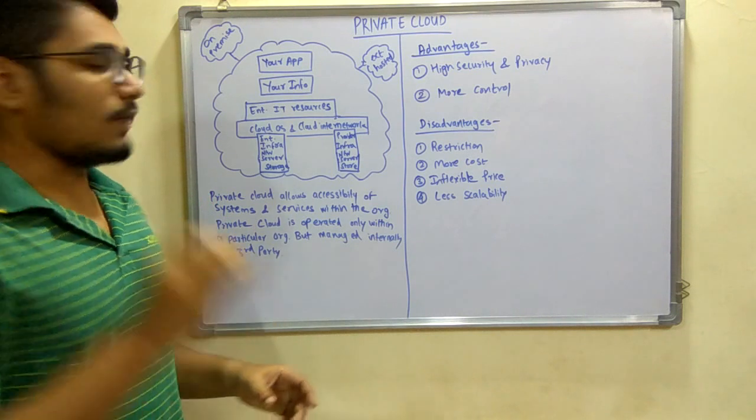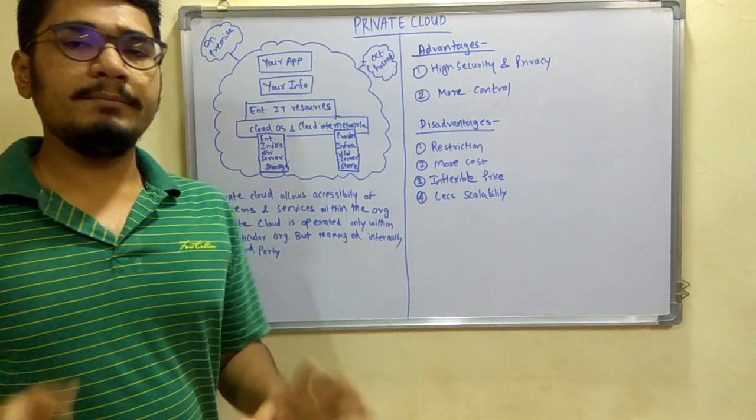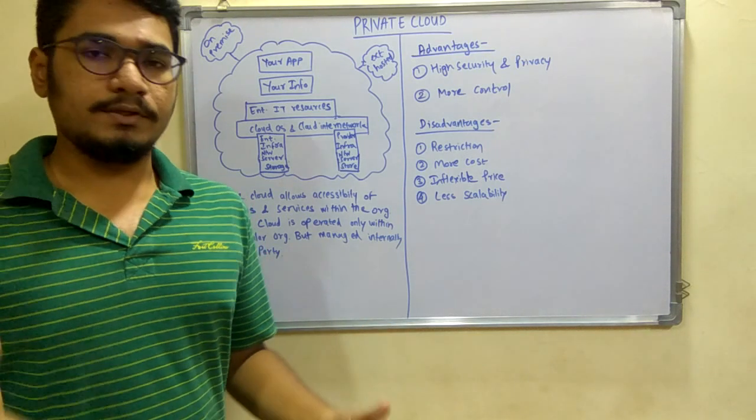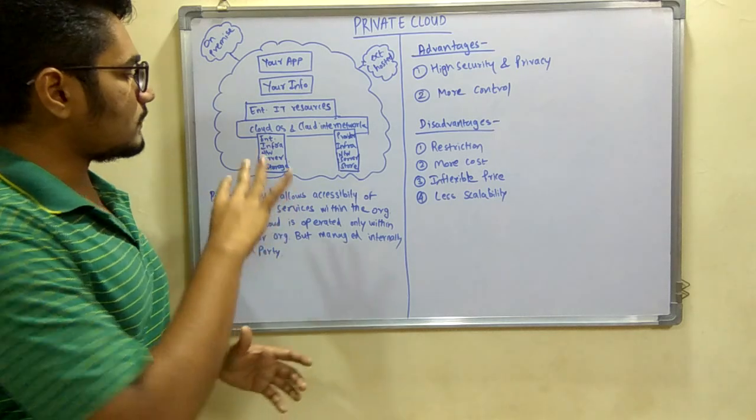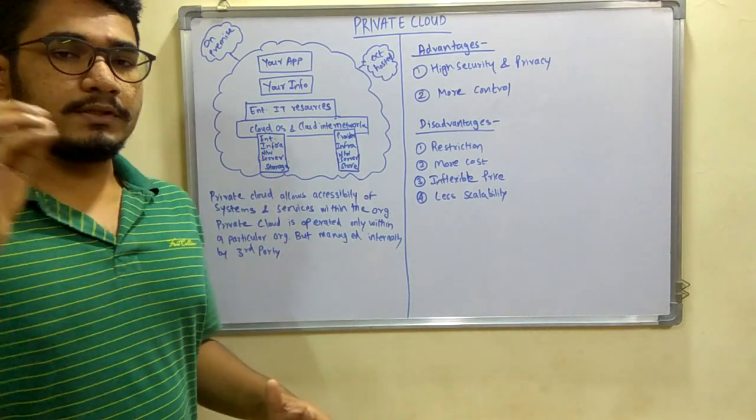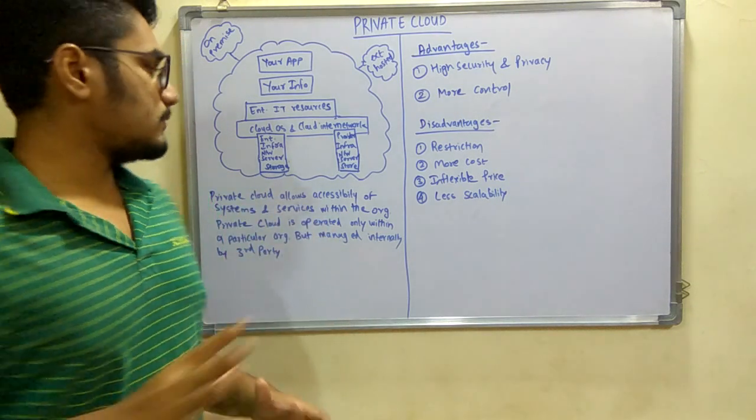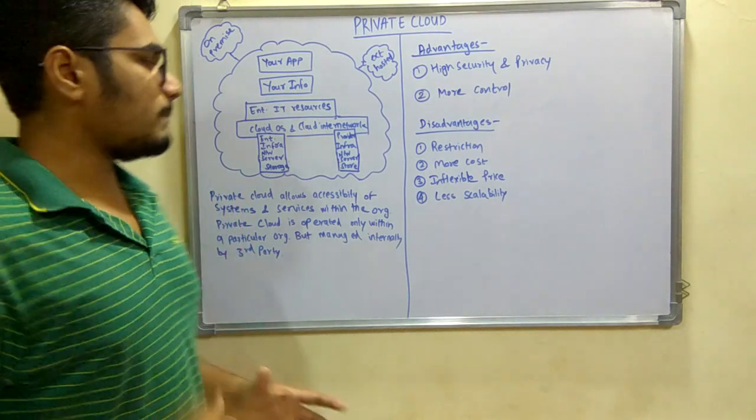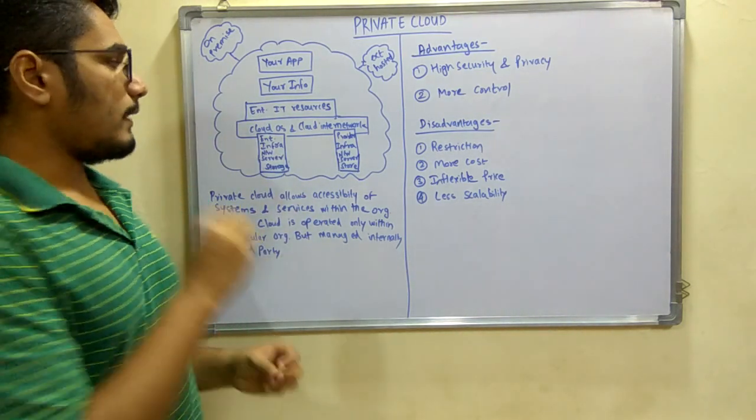Then you have the cloud OS and the cloud internetwork to communicate between different resources and produce output in an effective manner. Finally you have the enterprise infrastructure for network, server, storage, and provider infrastructure. This will be provided by the enterprise and this will be provided by third party sites.